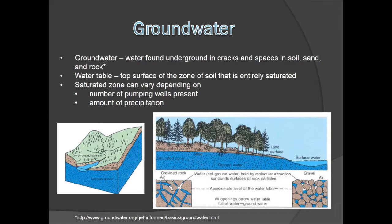Groundwater is found in the cracks and spaces in soil, sand, and rock, but the term groundwater can only be applied to the water that is held below the water table. The water table is the top surface of the zone that is entirely saturated with water. In the saturated zone, all of the openings between the rocks and soil particles are filled with groundwater. The depth of the saturated zone depends on how many wells are pumping out water and the amount of precipitation. However, in the unsaturated zone, which is above the water table, some of the spaces between rocks and soil particles are filled with air. Water in the unsaturated zone is not considered groundwater.